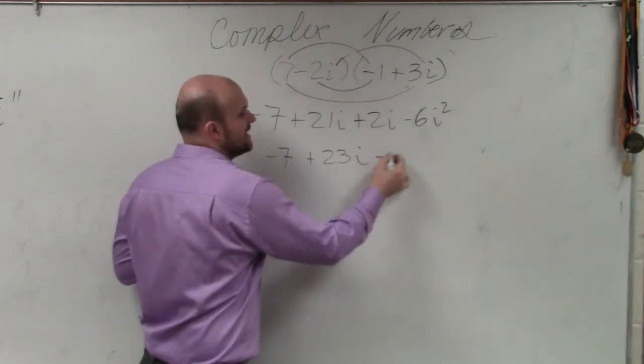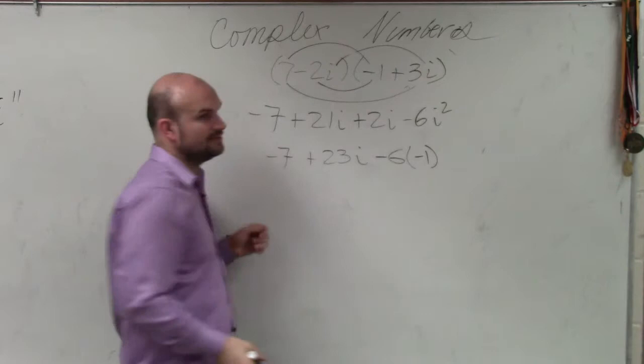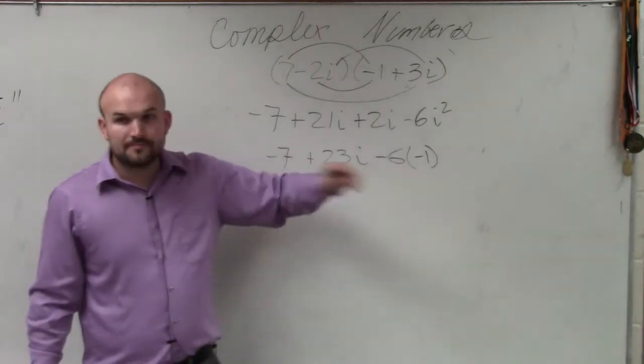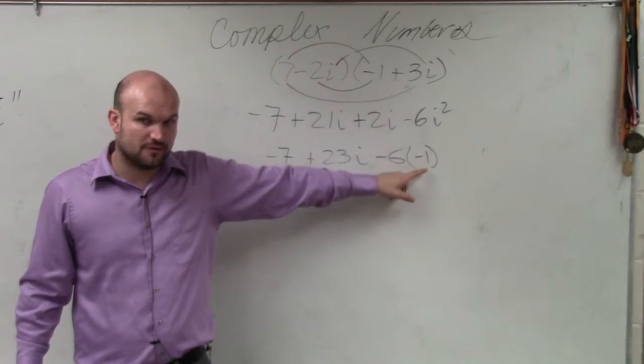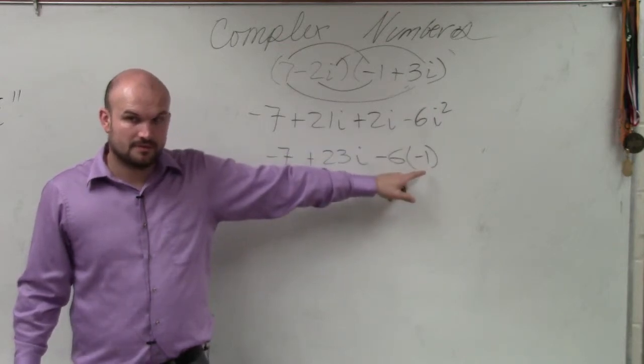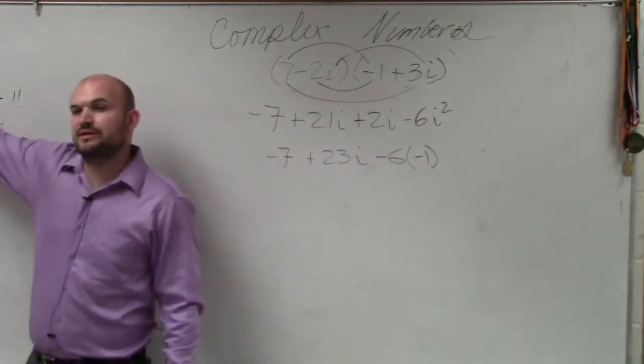21i plus 2i is plus 23i. And then this is negative 6i squared, which we know is negative 1. Wait, why don't you have 24i? Do you understand how i squared is negative 1? Well, it's written right up here. This is what we did at the beginning of class.